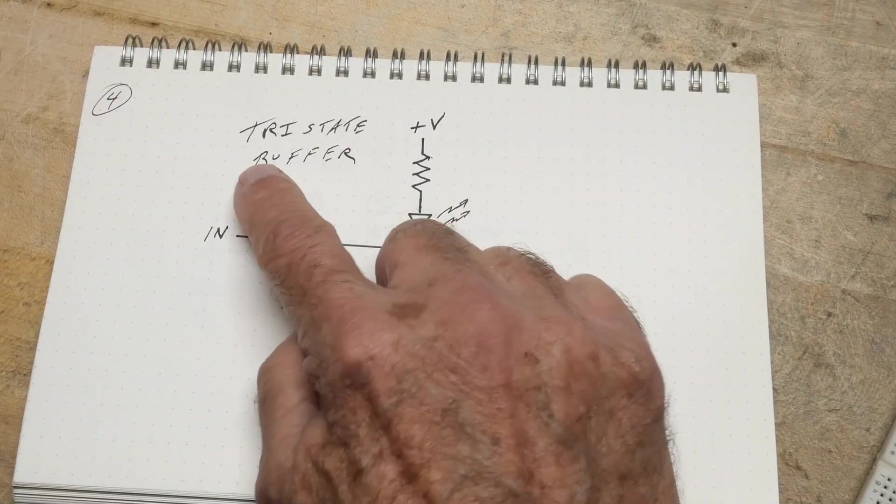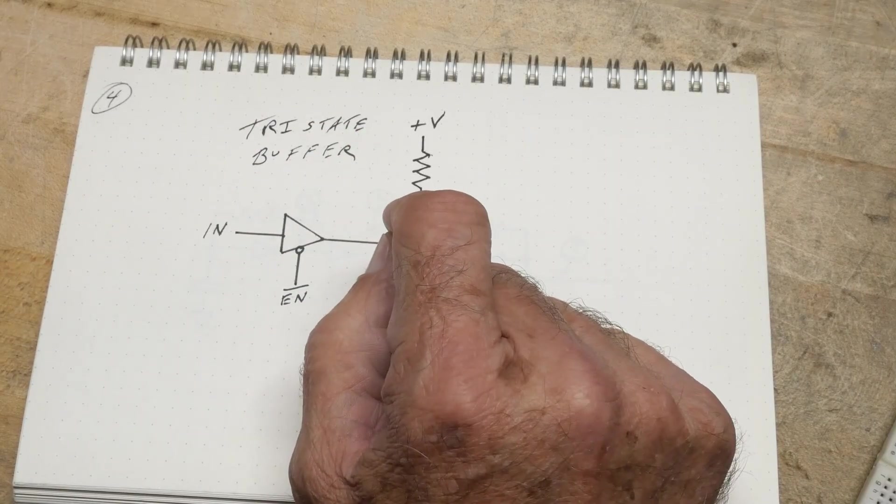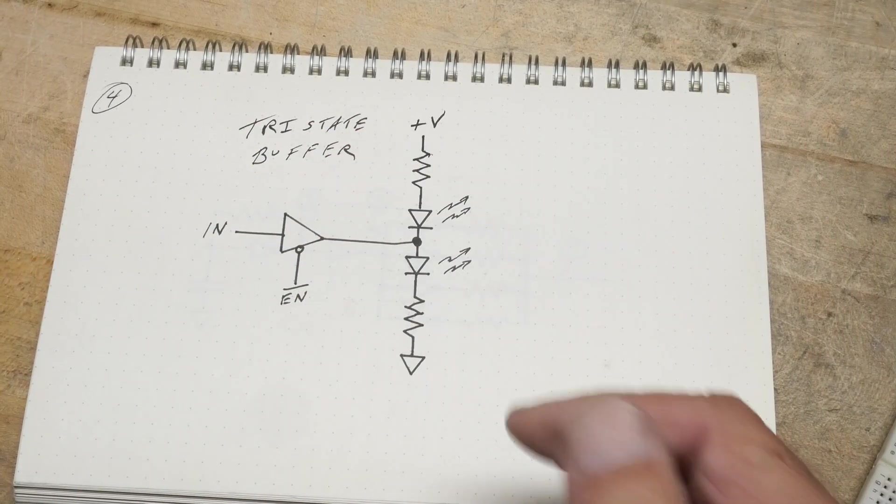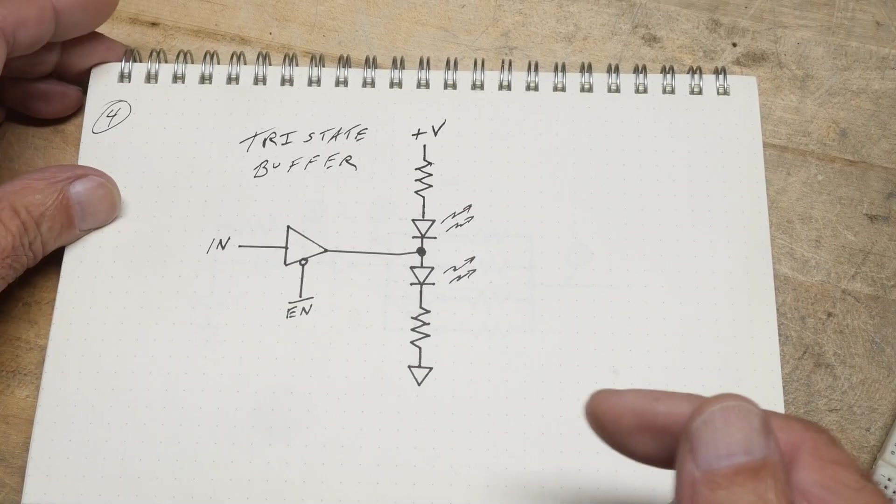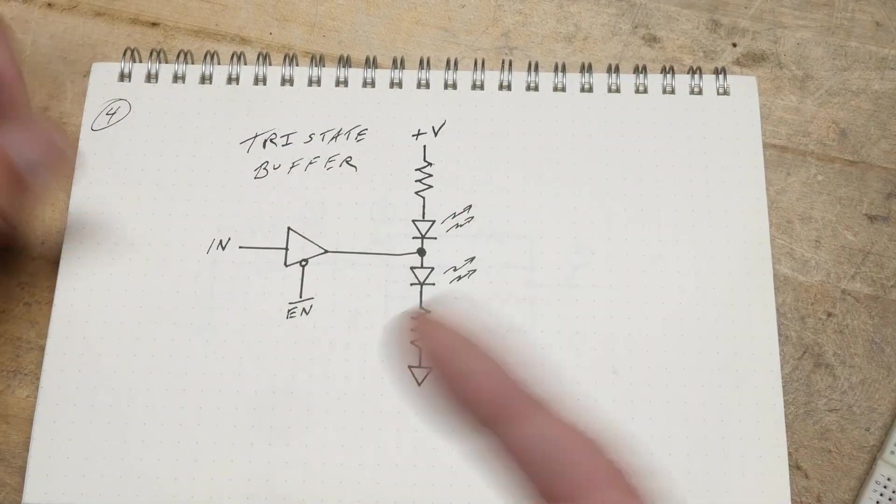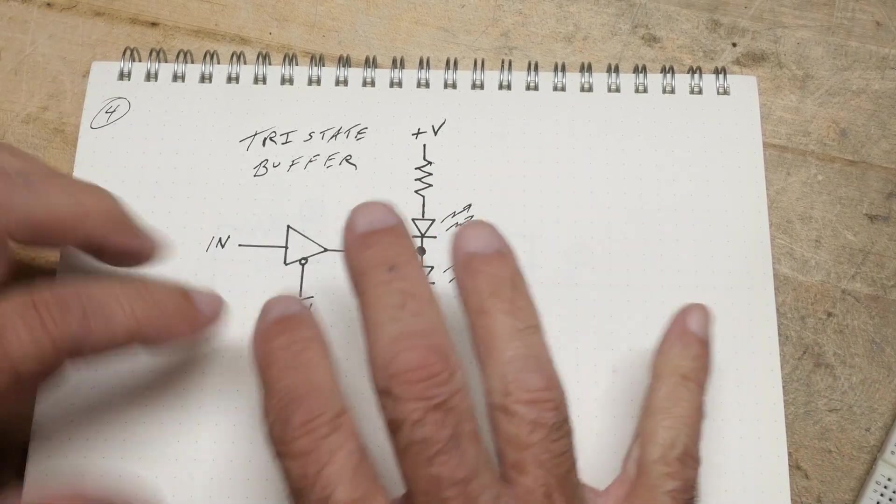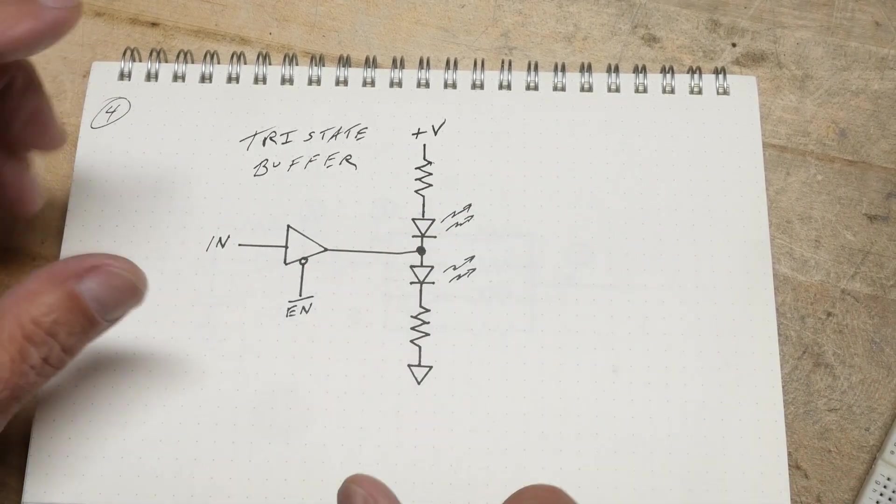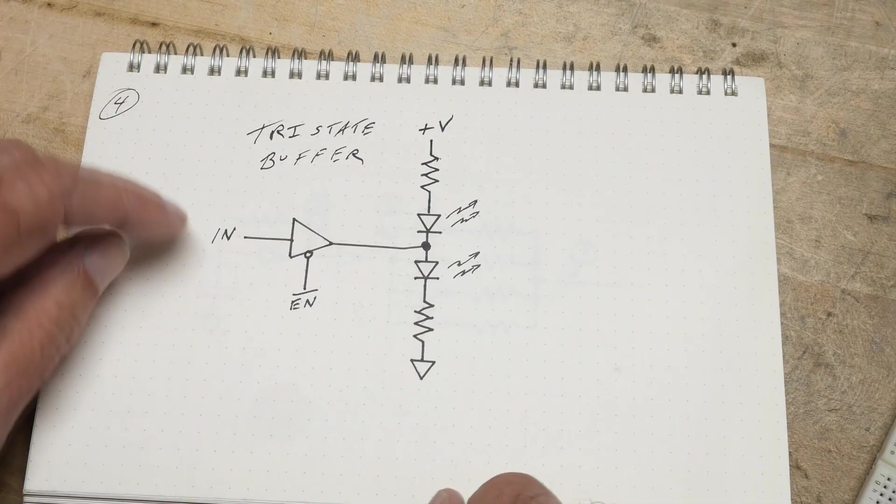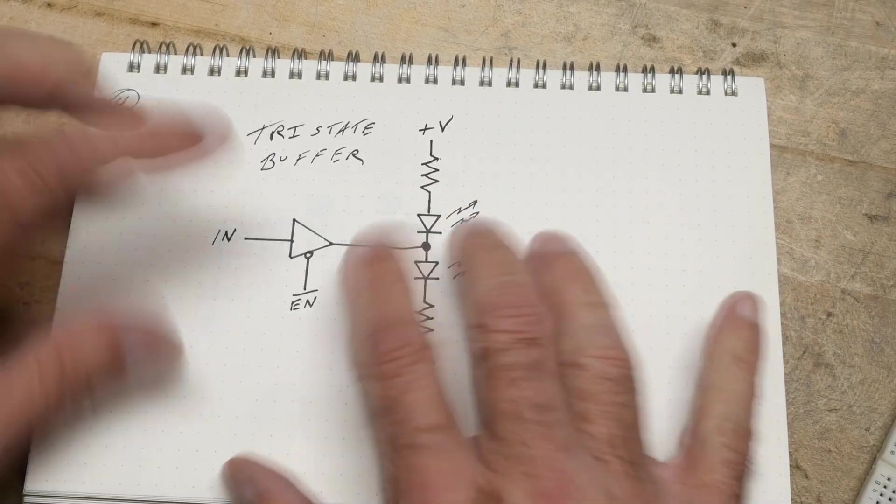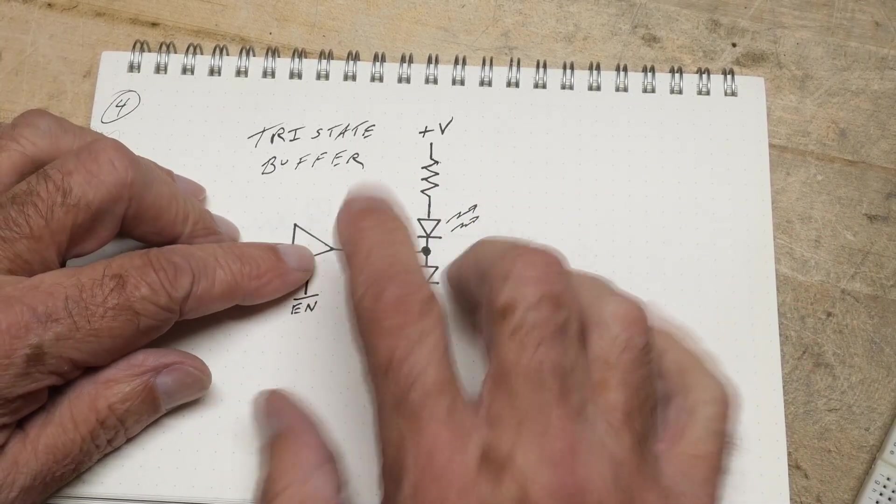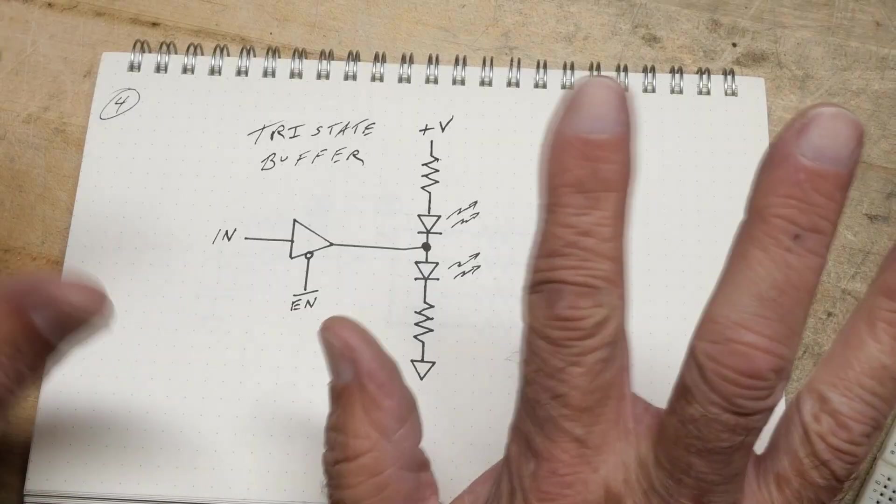And they solved it with something called a tri-state buffer or a three-state buffer, three-state output, things like that. But tri-state or three-state is what you'll hear. So we're going to use one first, and then I'll show you kind of how they work. So imagine that you have a system where you want to be able to pull it high or pull it low or just let go of it.